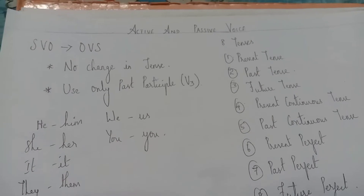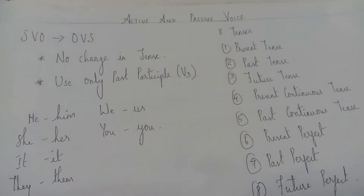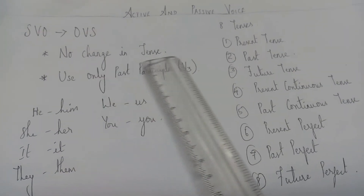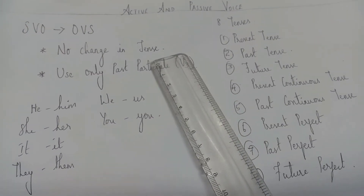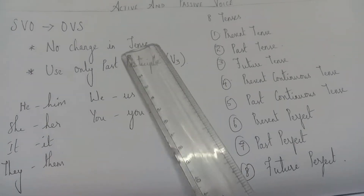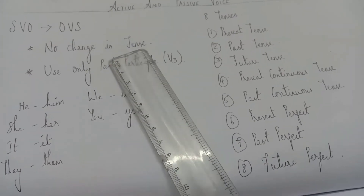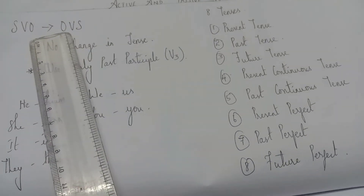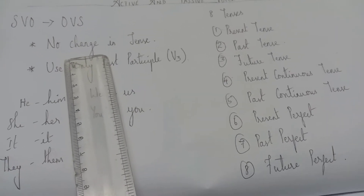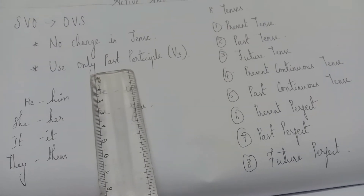The next thing you have to remember is: we should not change the tense of the verb given in the sentence. Tense remains unchanged. So the first point is SVO becomes OVS, and the second point is no change in tense — you should not change the tense of the verb given in the sentence.